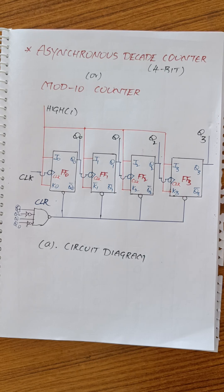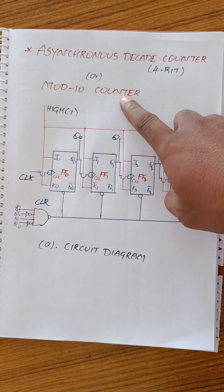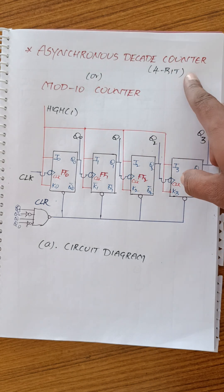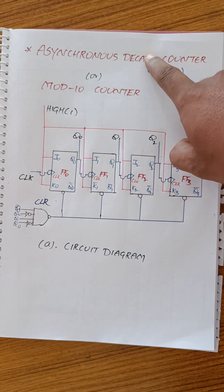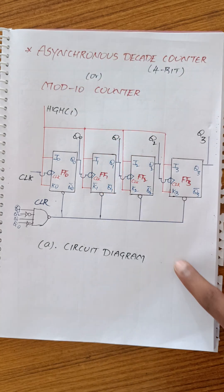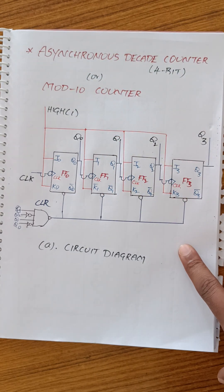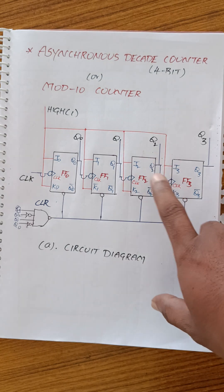Today's topic is the 4-bit asynchronous decade counter, also called a Martin counter. The term 'decade' stands for 10, meaning it counts 10 counting pulses — that is called an asynchronous decade counter.